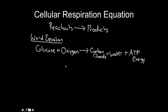Glucose plus oxygen gives us carbon dioxide, water, and ATP energy. This equation should look very familiar to you. What you should notice is that the equation for cellular respiration is actually the reverse of the equation for photosynthesis. In photosynthesis, you start with carbon dioxide plus water, with light over the arrow, and get glucose and oxygen. Here it's the reverse: glucose plus oxygen gives you carbon dioxide, water, and ATP energy.